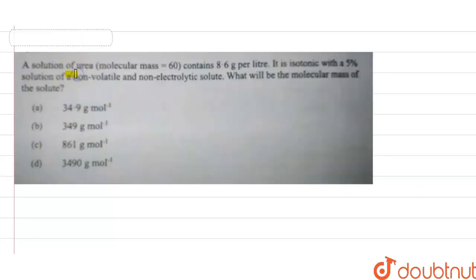In the question it is given a solution of urea molecular mass 60 contains 8.6 gram per liter. It is isotonic with a 5% solution of a non-volatile and non-electrolytic solution. What will be the molar mass of the solute?